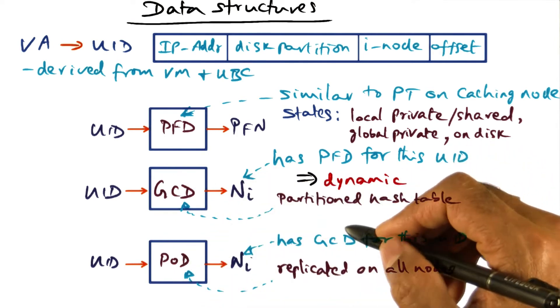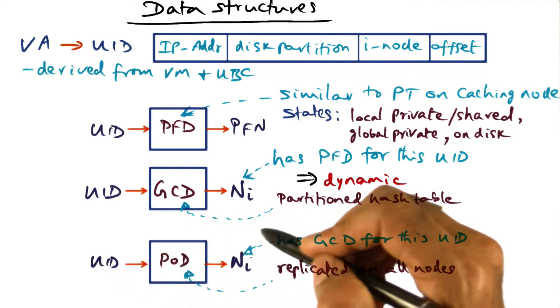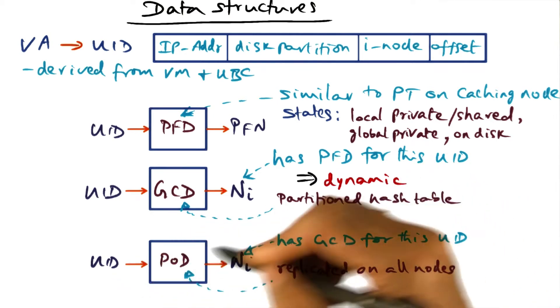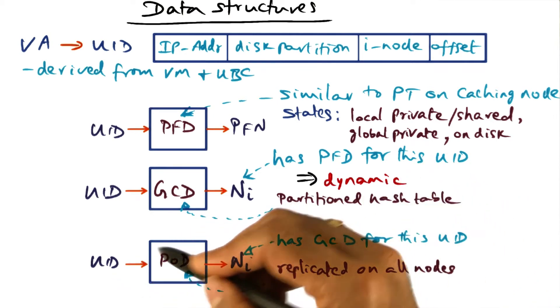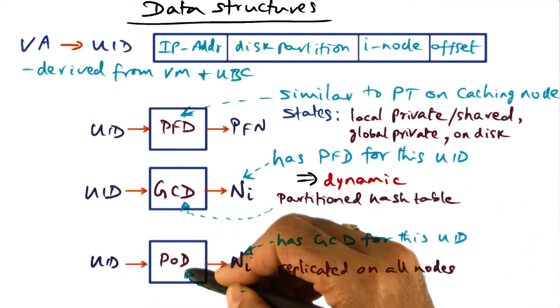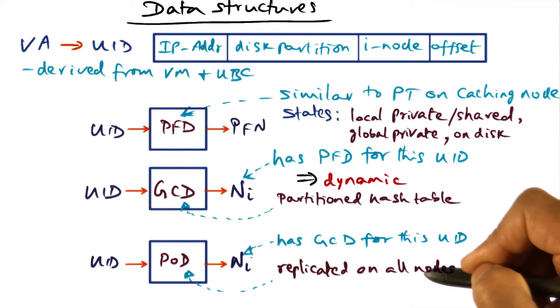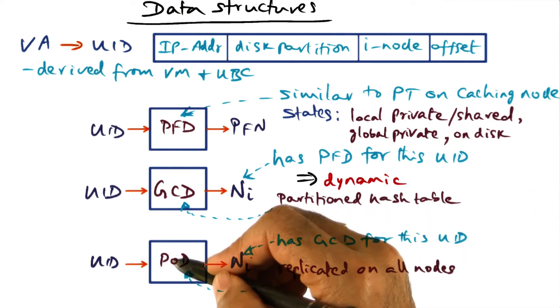And that is the page ownership directory. So the page ownership directory says, given a UID, which node has the GCD that corresponds to this UID. And this data structure, the page ownership directory, is replicated on all the nodes. It's an identical replica that is on all the nodes.